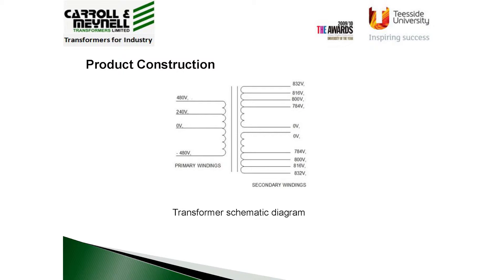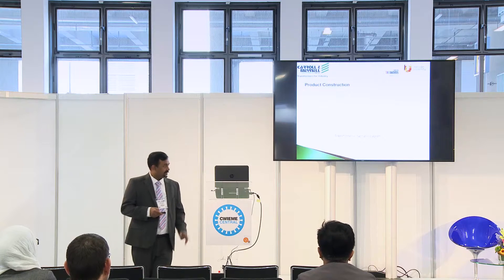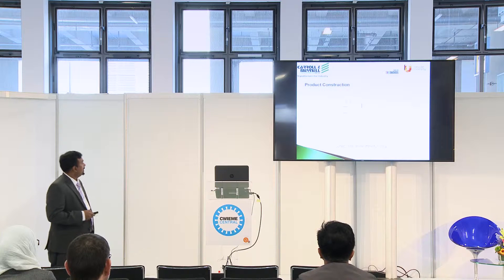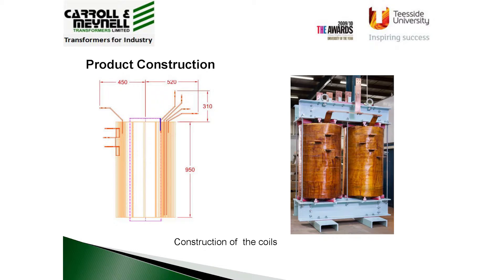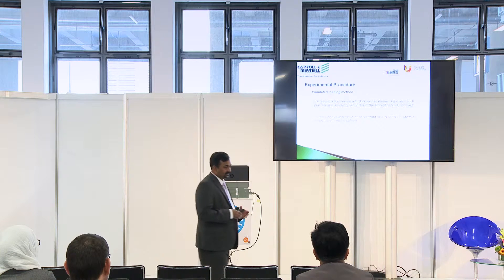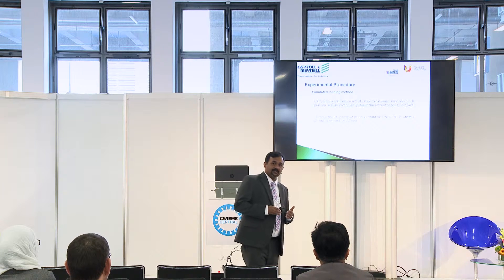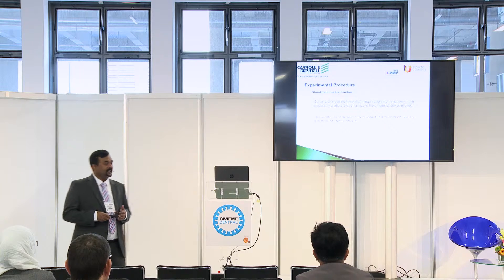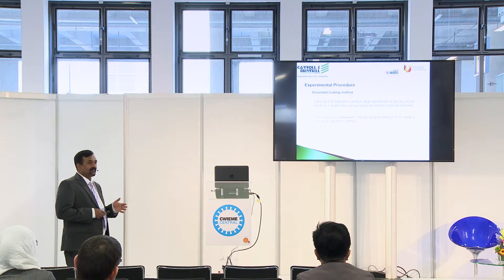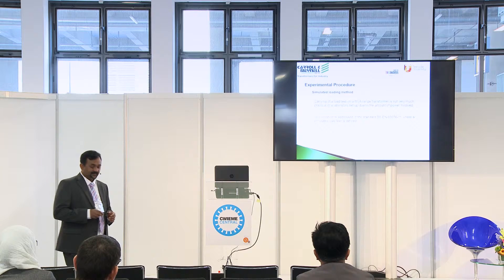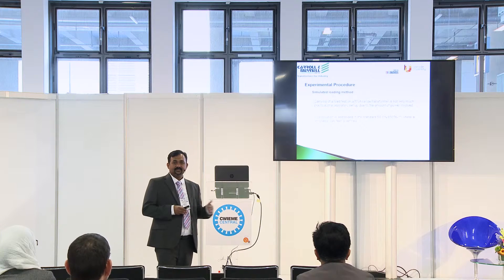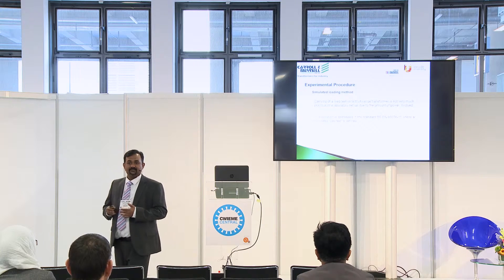Moving into the product construction — this is the schematic of the transformer, with one primary and two secondaries; the ideal structure was of course a UI core configuration. This is the schematic of the initial coil design and this is how it looked when constructed. Regarding simulated loading: we wanted to make sure that temperatures do not reach excessive levels, but you obviously can't load such a high-power transformer under normal laboratory conditions — single phase 1 MVA is quite a high power level to achieve in a laboratory.